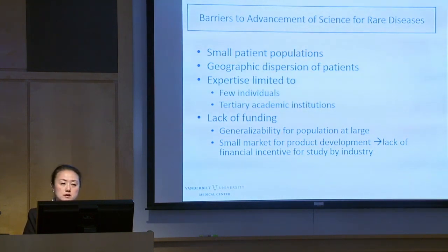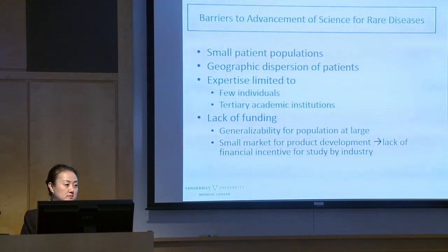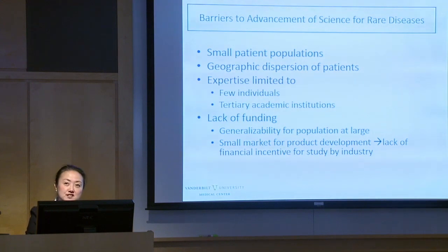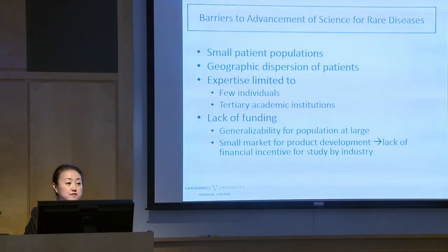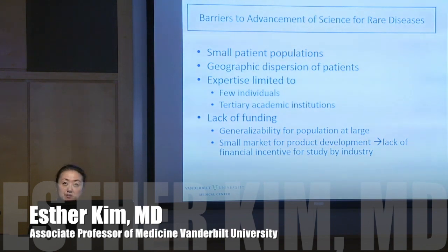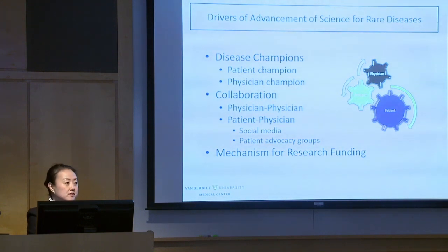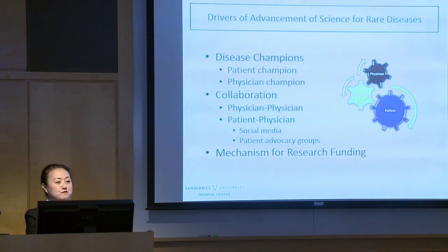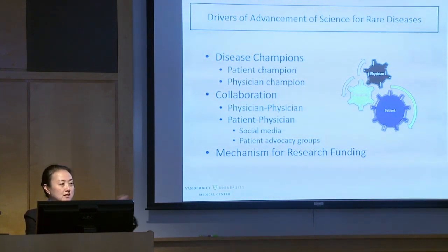What are the barriers to advancing science for rare diseases? Small patient populations — a general cardiologist may see one or two SCAD cases in their career. Geographic dispersion of patients across the United States. Very few individuals know about SCAD. There's a lack of funding; drug and stent companies want to sell to large populations, so a small number of patients isn't attractive compared to atherosclerotic disease. Disease champions, collaboration between physicians, and patient-physician interaction are all essential.